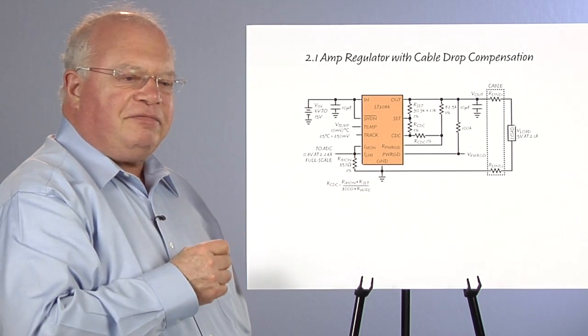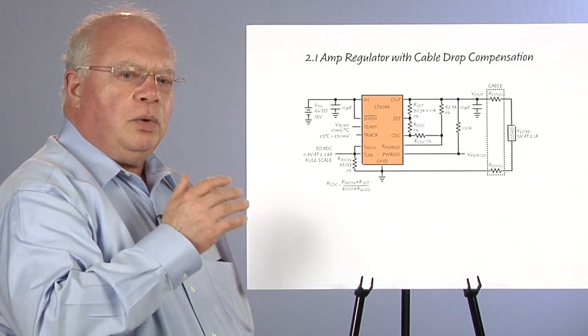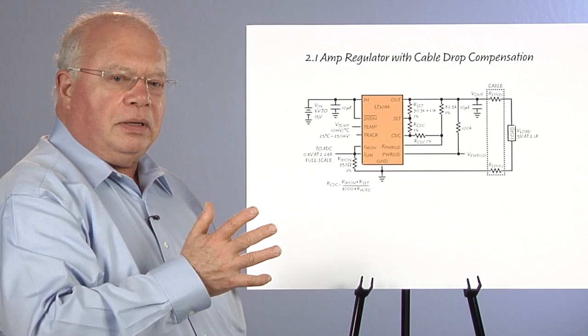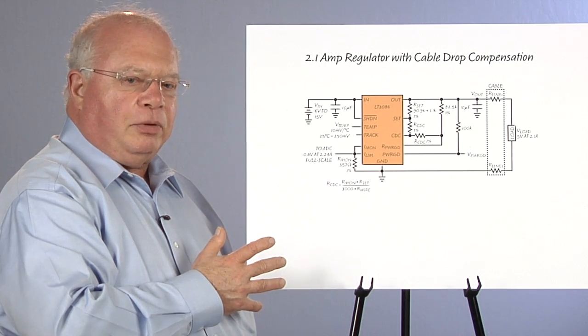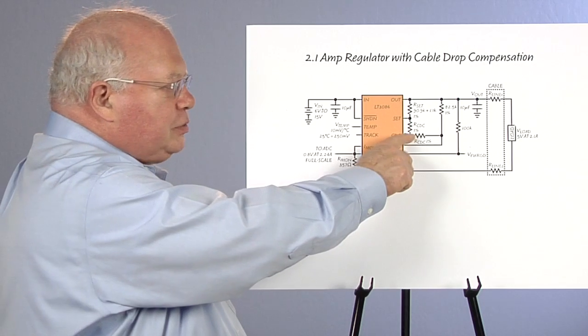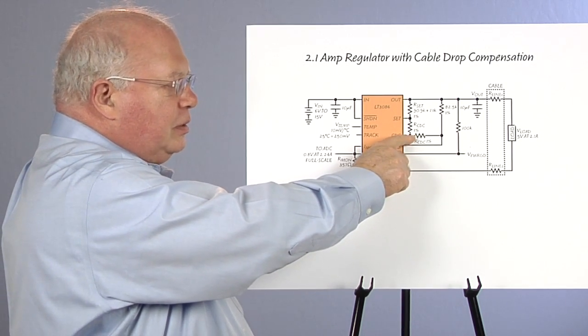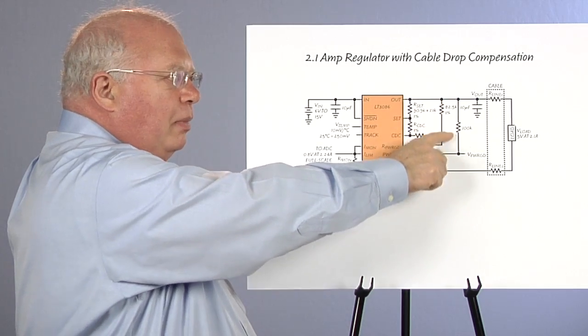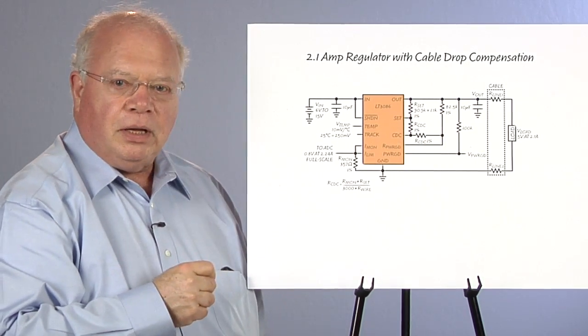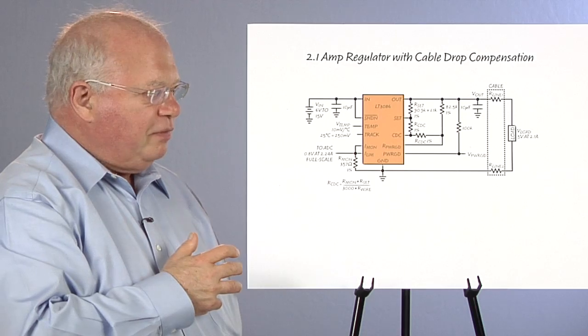Since we have power good on this, we don't want to have the power good go out of regulation because we've got our cable drop compensation. So we tie another resistor from CDC over the power good, and that modifies the power good point so that it matches what the output voltage is doing.